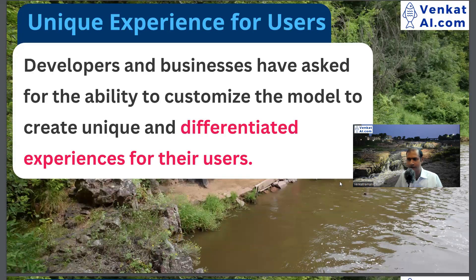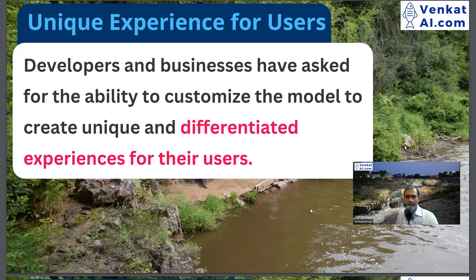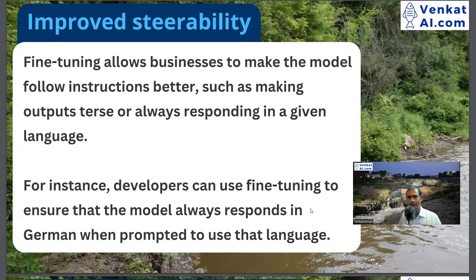If I'm talking about use cases, what are the actual features? Fine-tuning of ChatGPT 3.5. Developers and businesses find it very powerful. First: differentiated user experience. Second: improved steerability — fine-tuning allows businesses to make the model follow instructions better, such as making outputs concise or always responding in a given language. We can define this through fine-tuning.